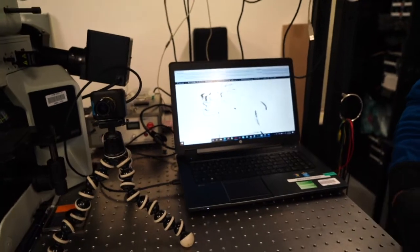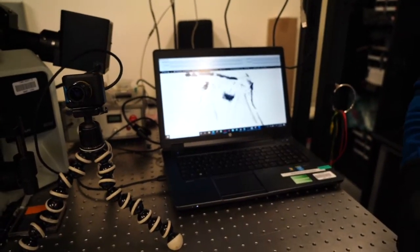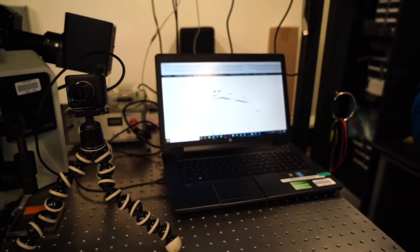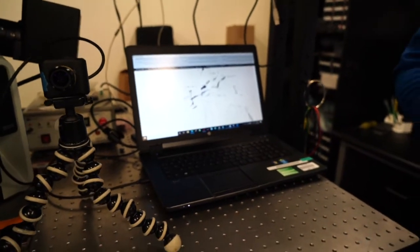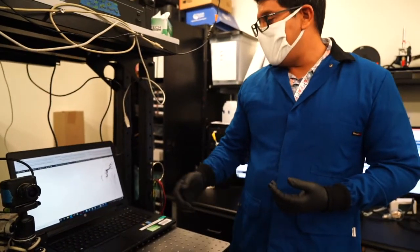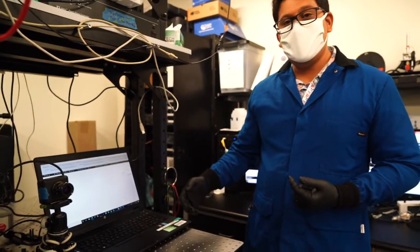Your standard cameras that you have in your cell phones, they actually capture still images, but an event-based camera actually captures motion in the scene.